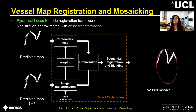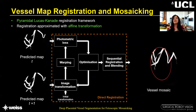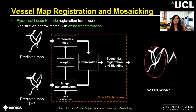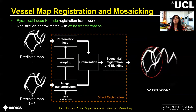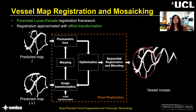We use vessel maps as the underlying metric for driving pairwise frame registration. Direct registration is robust in fetoscopy compared to feature-based matching and alignment, since feature-based methods fail due to lack of texture and low resolution. We use a pyramidal Lucas-Kanade registration framework that optimizes the photometric error between the vessel probability maps of two consecutive frames. The registration between two consecutive frames is approximated with an affine transformation.